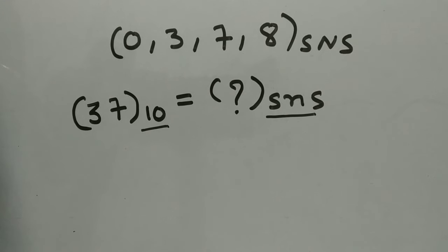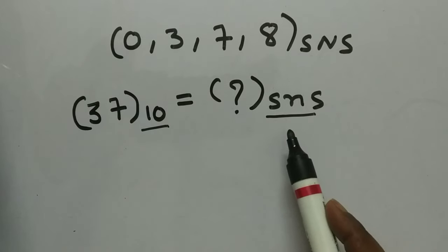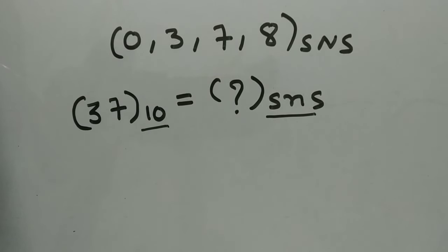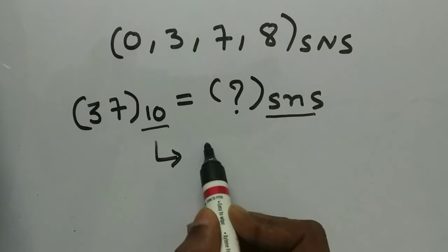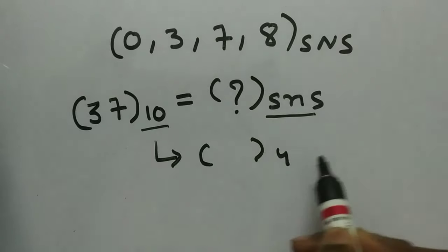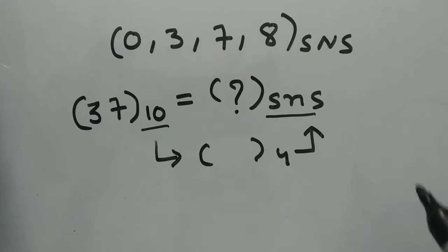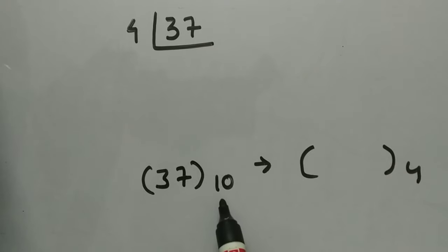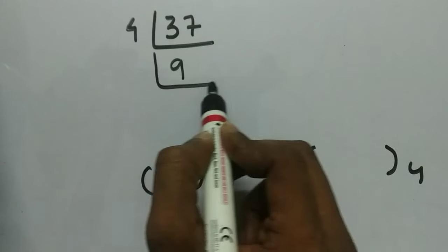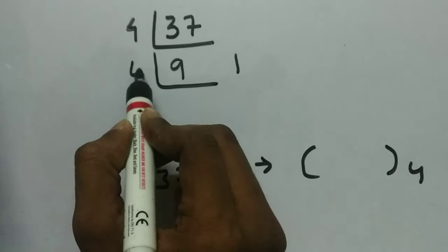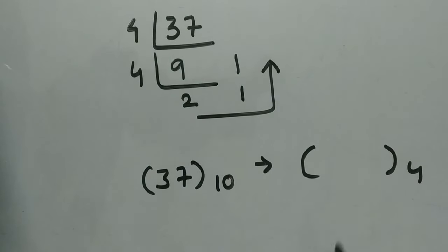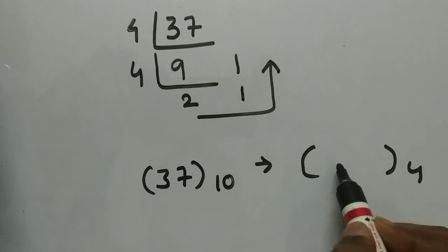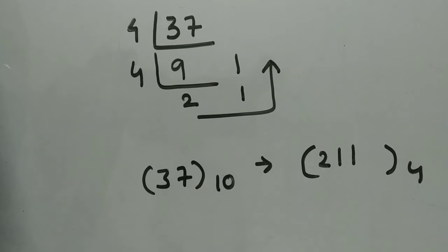Here we want to convert 37 in base 10 to base SNS. First we convert base 10 to base 4, then convert to base SNS. So let's convert 37 (base 10) to base 4 by dividing by 4: we get 9 remainder 1, then 2 remainder 1. So 37 in decimal equals 2 1 1 in base 4.